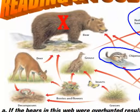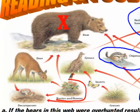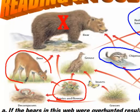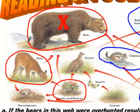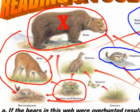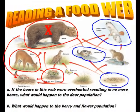Another example: start with berries and flowers as our producer. The energy flows to the deer — our herbivore and second link. Then the energy from the deer flows into the bear, which is our third link. And as always, the last link goes down to the decomposer — fungus. So those are two food chains you can pick out of this food web, and there are a few others you can use.